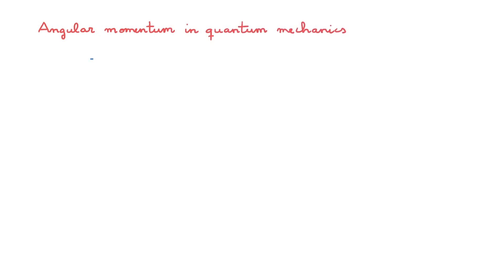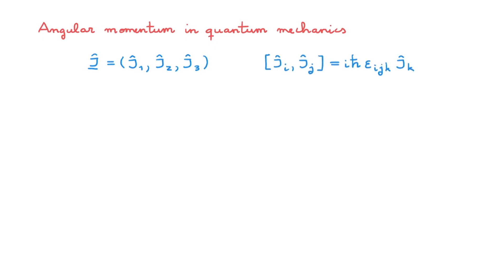Let's start with a summary of angular momentum in quantum mechanics. We consider a vector operator j made of three operators j1, j2, and j3. This operator j will be an angular momentum operator if the three components obey these commutation relations. Here I'm using the Levi-Civita symbol and the convention that we sum over repeated indices k. If these ideas don't sound familiar to you, then you should first check out the video that introduces angular momentum.